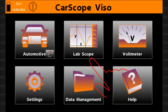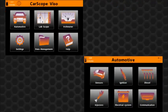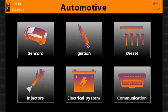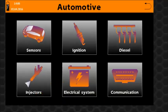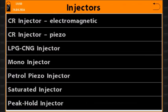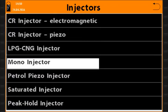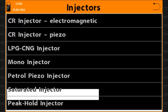Injector test functions are part of automotive component test operations included in CarScope Viso. After you select the injectors function icon, a menu appears on the screen and allows you to select the injector system.